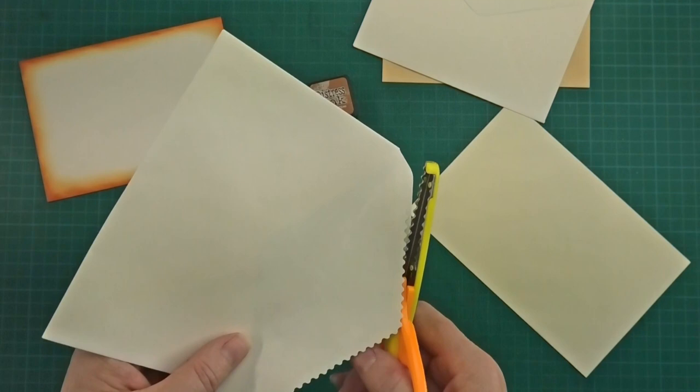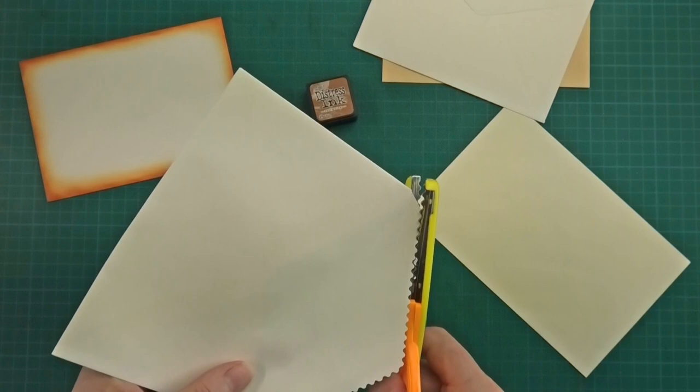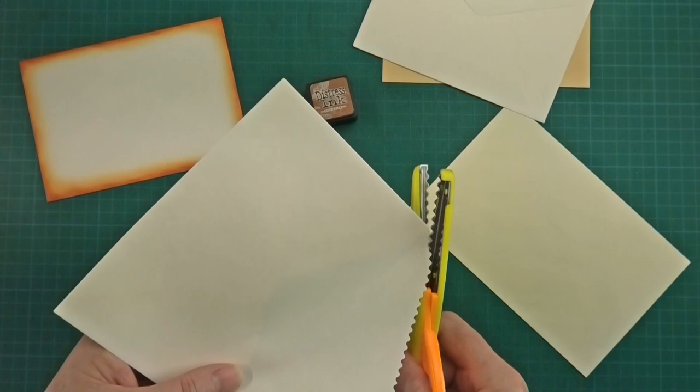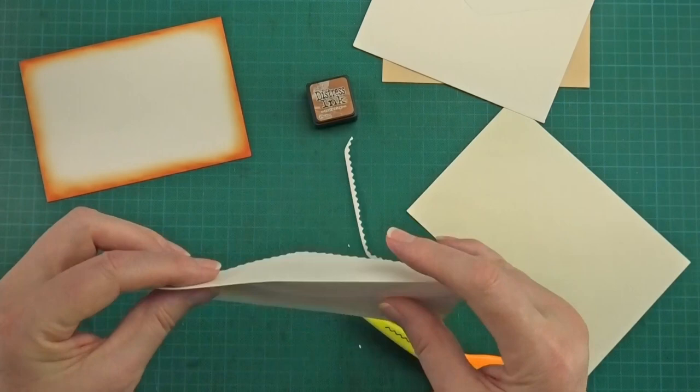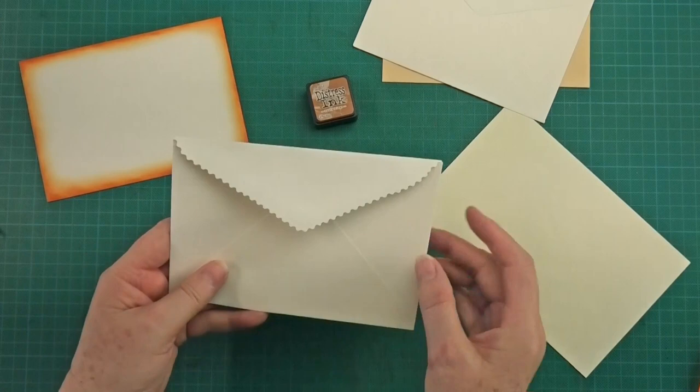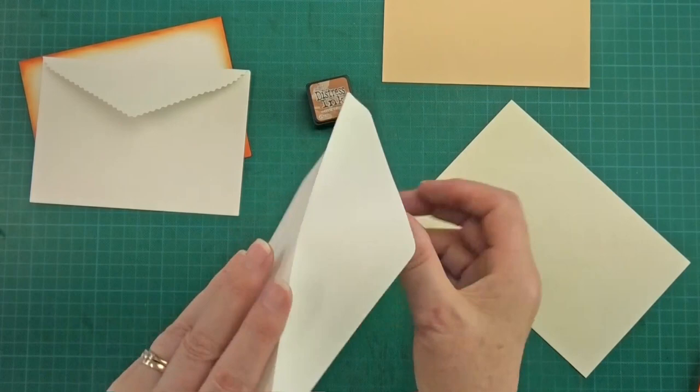You can see I missed there because I stopped and looked up at the camera. I'm going to come off the edge there, and there's my scalloped edge all in one piece. If you want to just cut a piece, cut the shape of a triangle on a piece of copy paper and do a little practice before you cut an envelope.